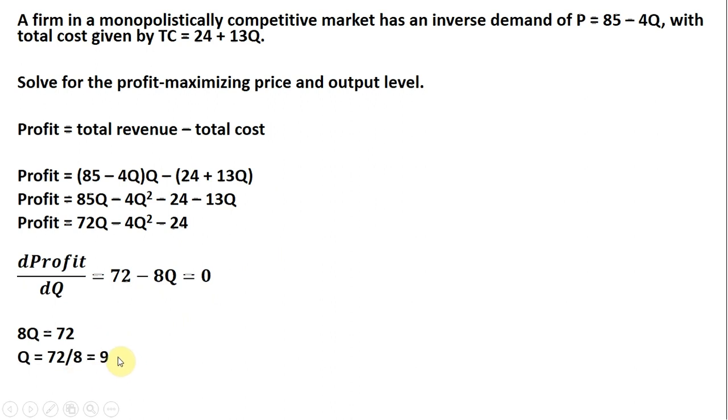That's the profit-maximizing output. To get the price, we plug this 9 back into the firm's inverse demand. When we do that, the profit-maximizing price is $49. I hope you found this video helpful.